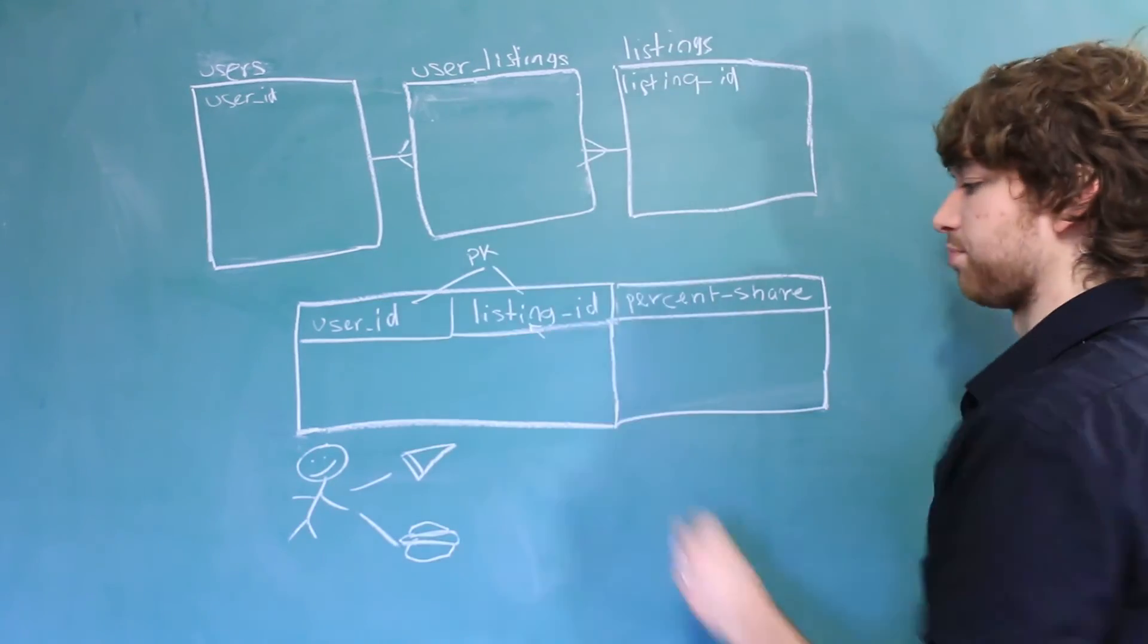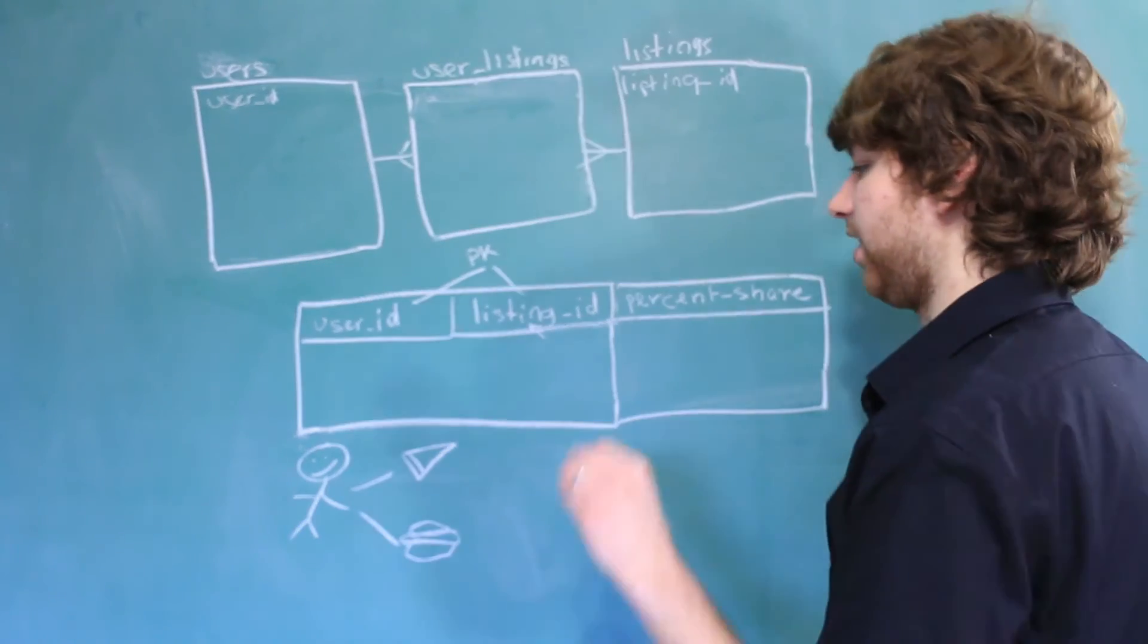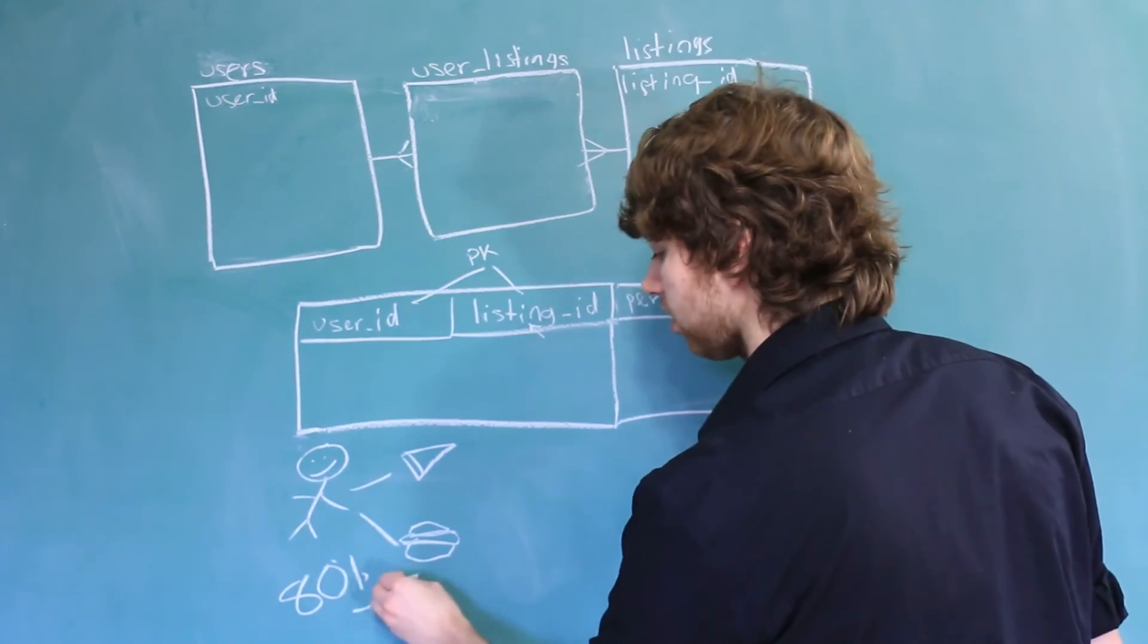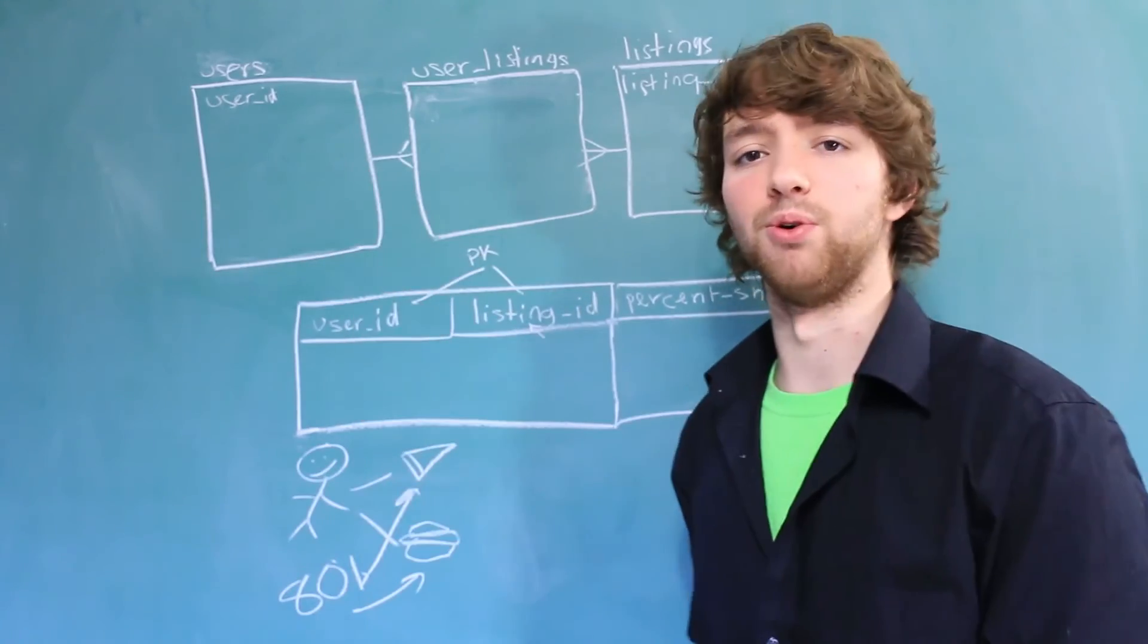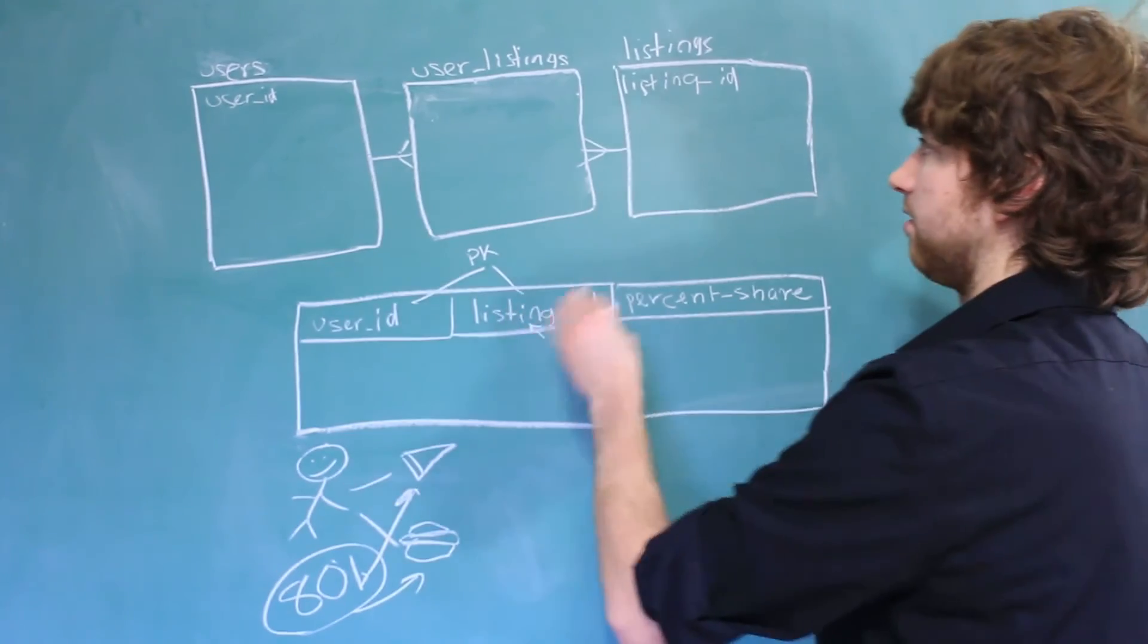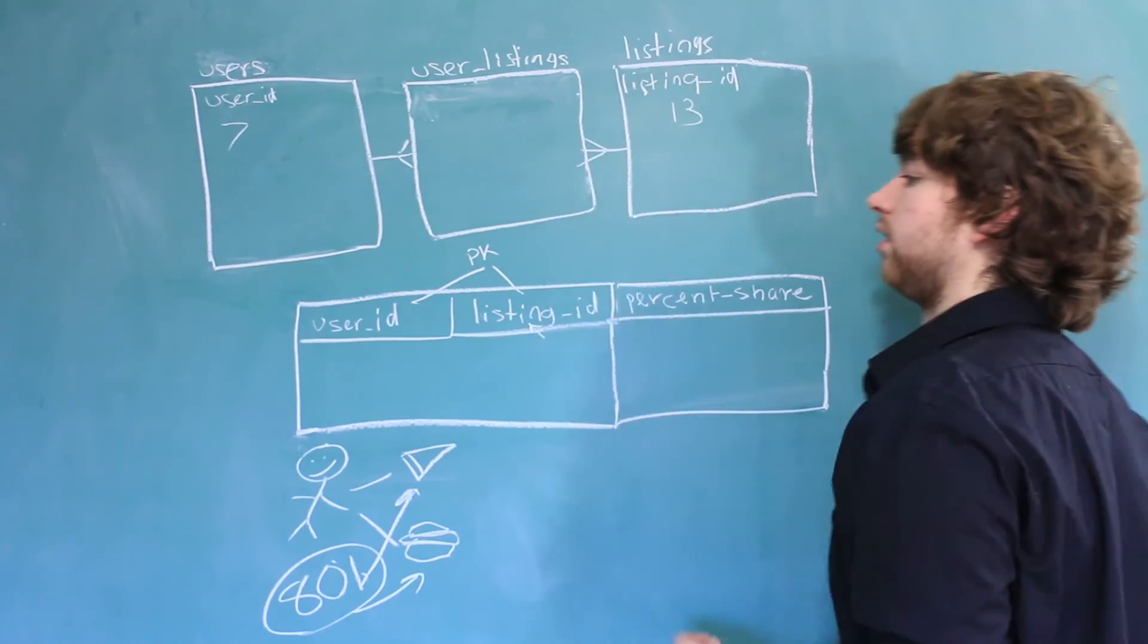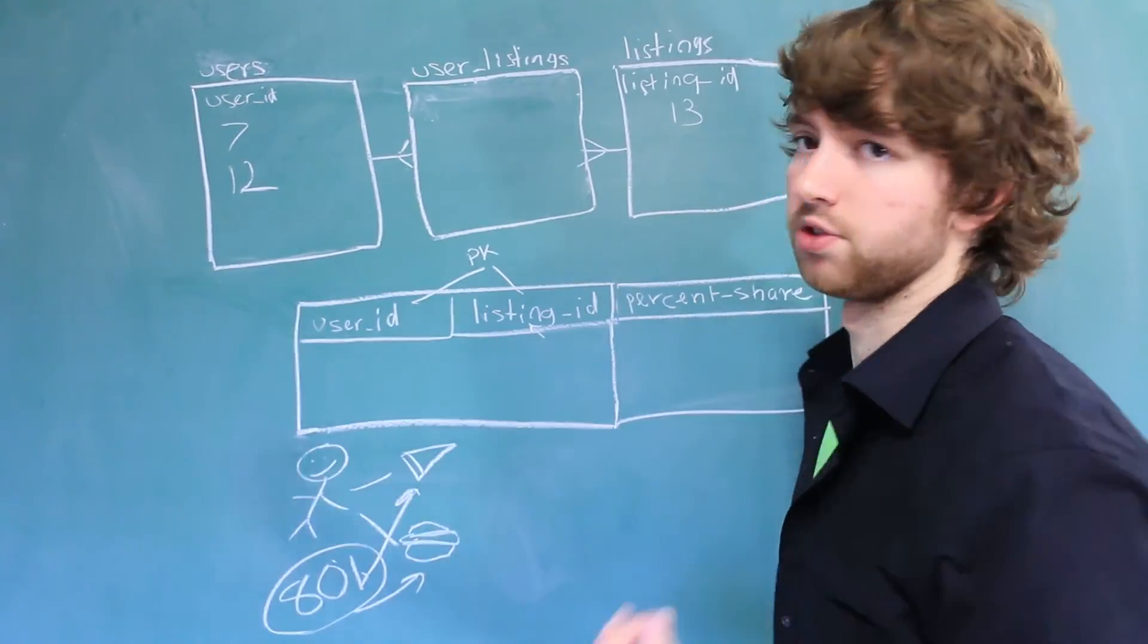So he is selling a cheeseburger and some pizza. Yeah, I'm from America. Don't judge me. And if you just gave a number, such as 80% share, well, does that describe the hamburger or the pizza? It doesn't belong inside of the user table. That means this data actually belongs to the association of the user and the listing. So let's say we have the user ID of 7, the listing ID of 13, and a user ID of 12. We'll make them both owners of a bicycle.